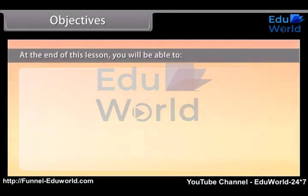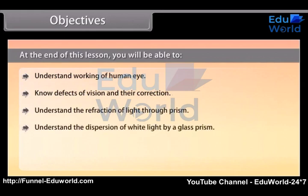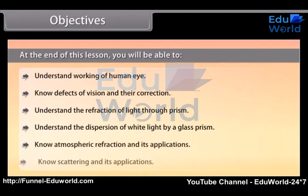At the end of this lesson you will be able to: understand the working of the human eye, know defects of vision and their correction, understand the refraction of light through a prism, understand the dispersion of white light by a glass prism, know atmospheric refraction and its applications, and know scattering and its applications.